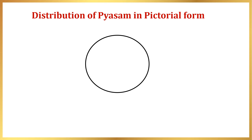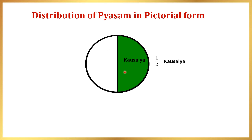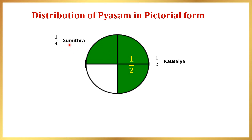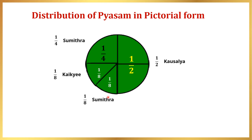To understand the distribution of the Payasam, let us look at a pictorial form for better understanding. This is one whole, considered to be the bowl of Payasam. As per the shloka, half of this whole was given to Queen Kaushalya. Now, from the remaining half, again half of that — meaning one-fourth — was given to Sumitra. From what was left over, half of that — one-eighth — was given to Kaikeyi. The remaining one-eighth was then given to Sumitra. See how beautifully it has been depicted in the shloka.